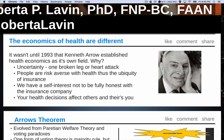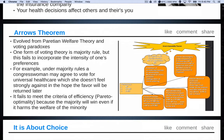As a nurse, we all know the importance of herd immunity. Kenneth Arrow's theorem evolved from Paretian welfare theory and the voting paradox. One form of voting theory is the majority rule. For example, under majority rule, a congresswoman may agree to vote for universal health care, which she doesn't feel strongly against, in the hope the favor will be returned later when she wants another congresswoman to vote for something she really cares deeply about. Thus, it fails to meet the criteria of efficiency or Pareto optimality, because the majority will win even if it harms the welfare of the minority.